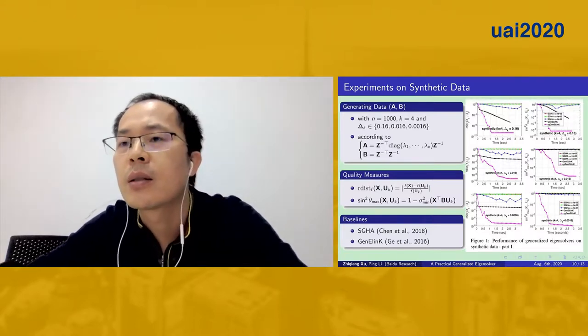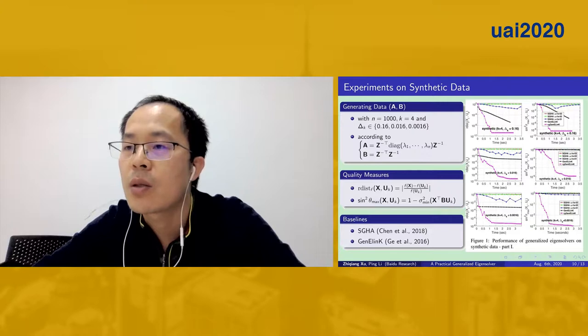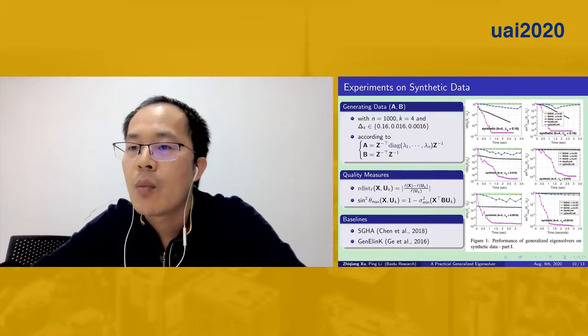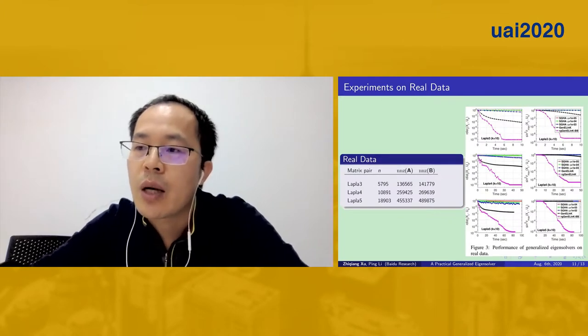From the figure on the right, we can see that our algorithm performs consistently much better than the two baselines, while GD-Link's performance depends crucially on the eigenvalue gap.